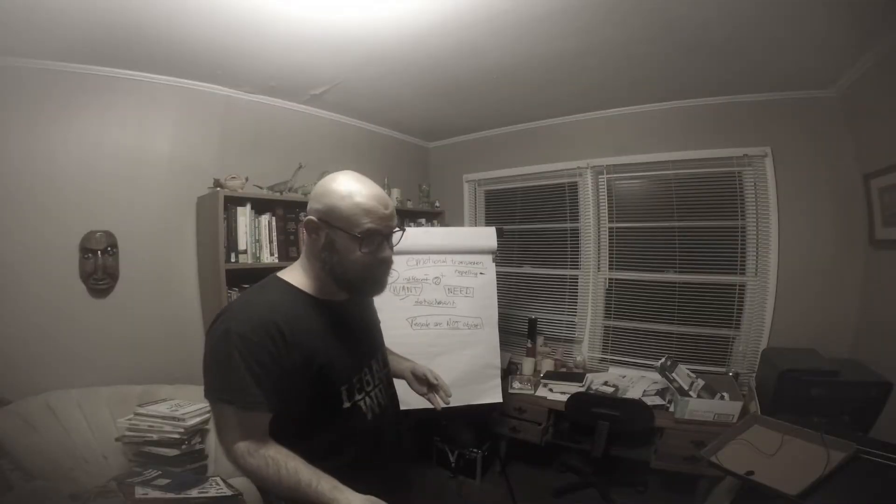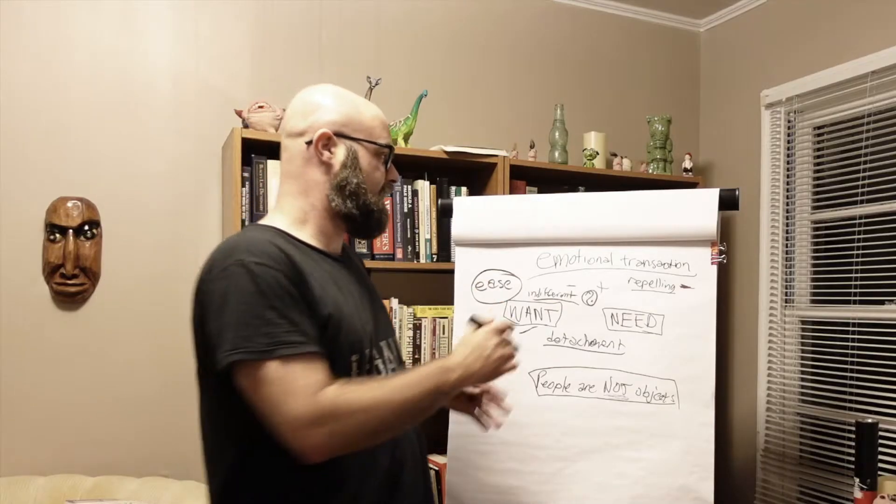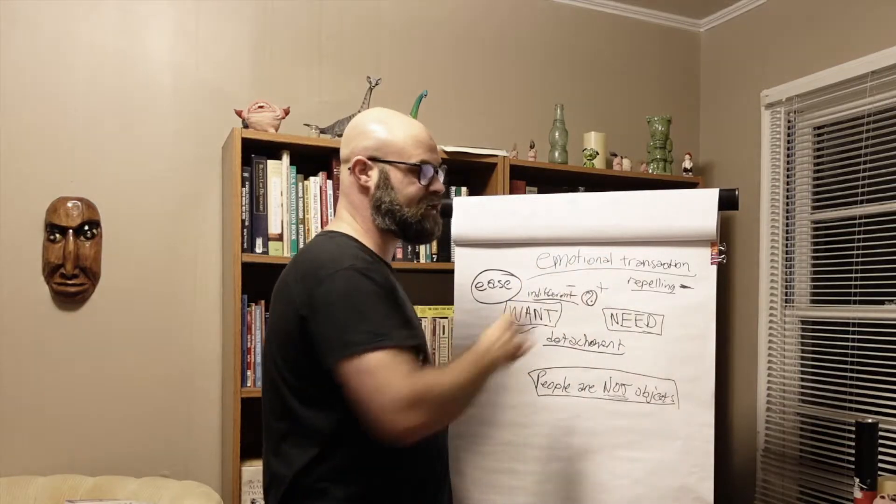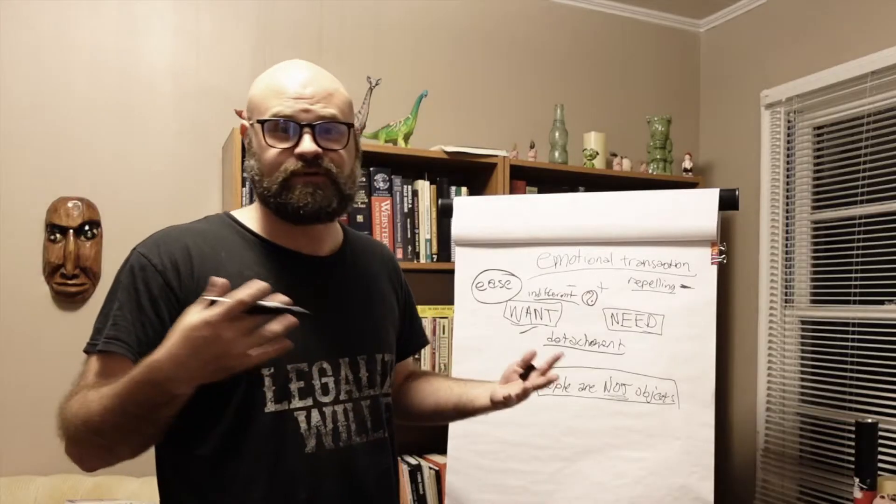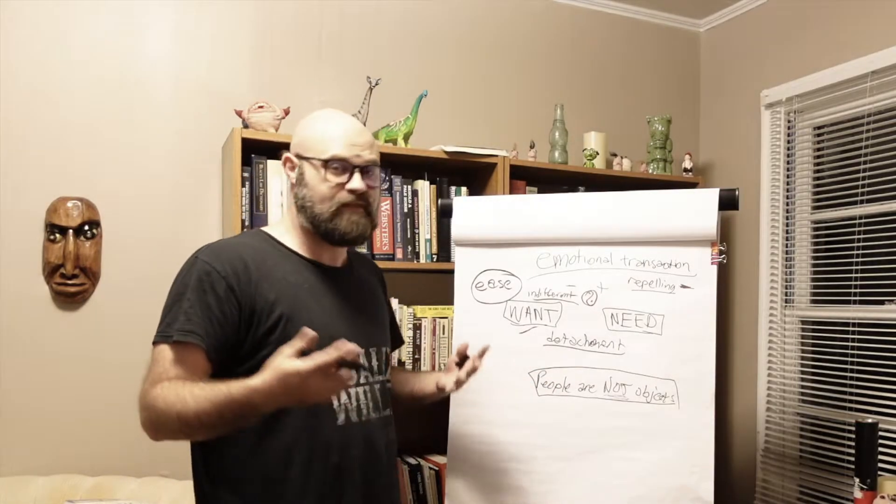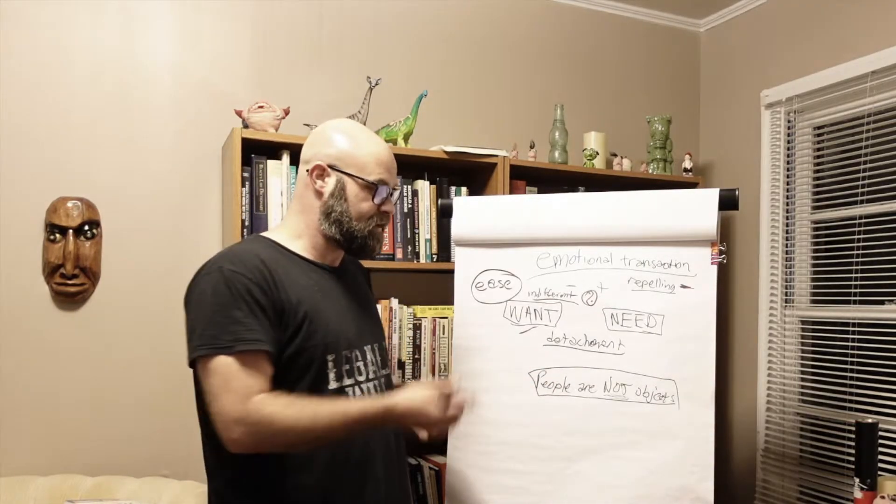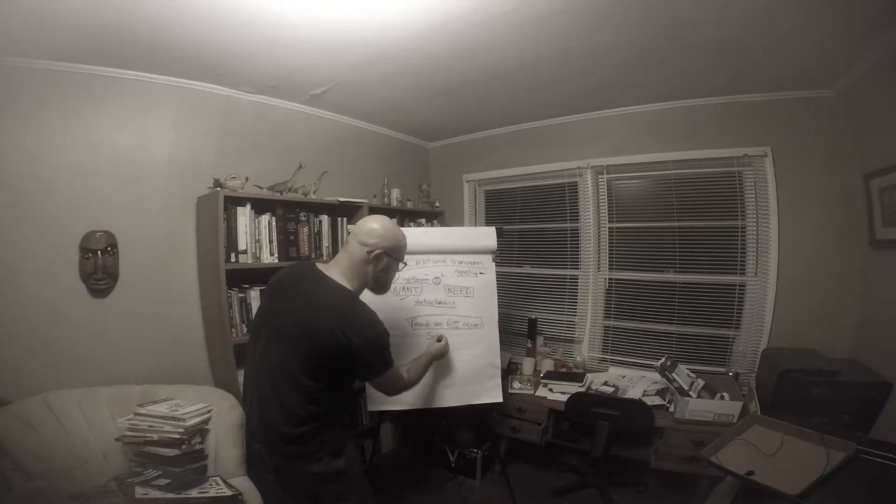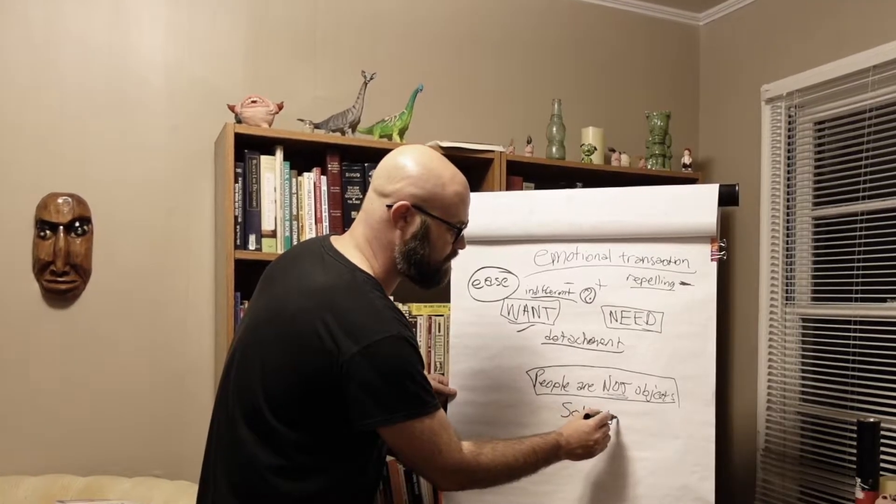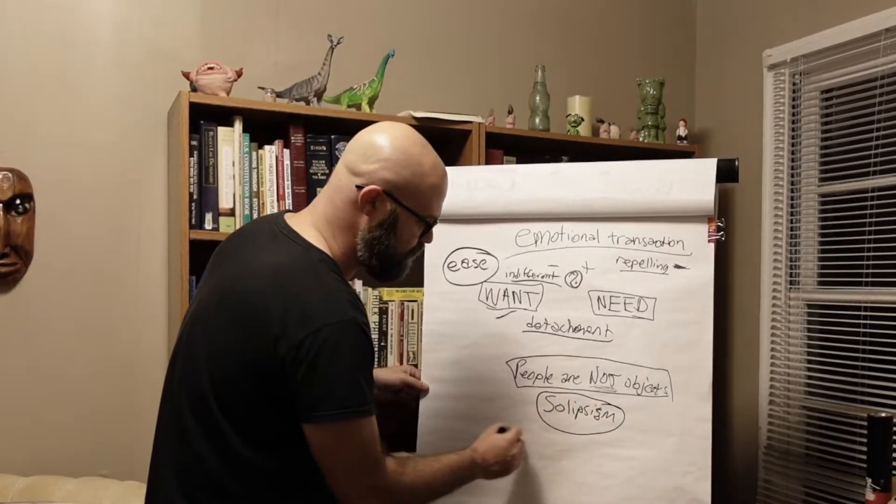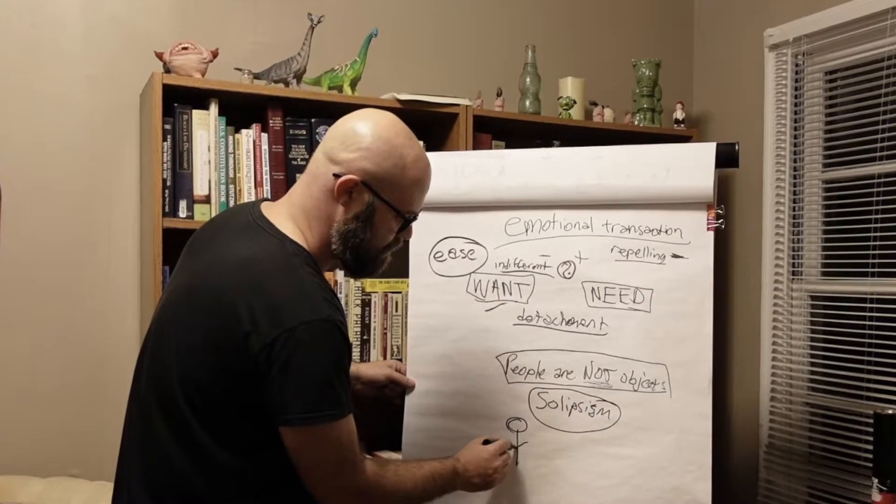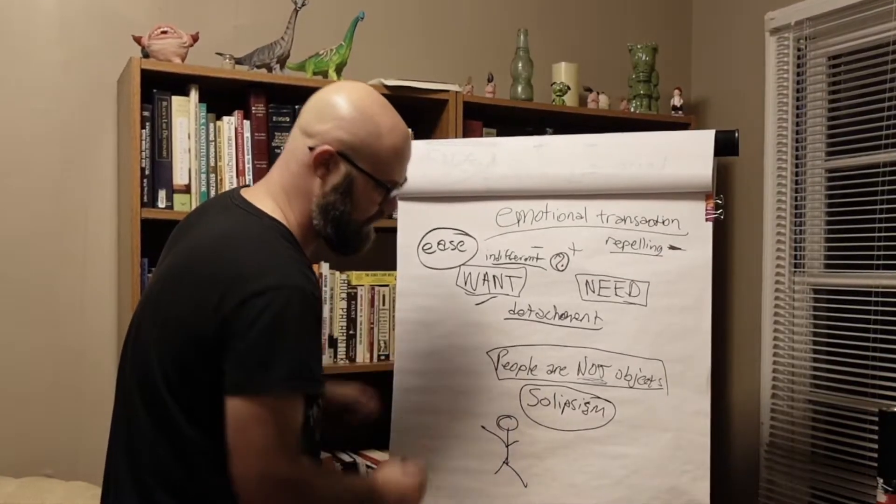But when we begin to manipulate people, we are creating all these weird emotional transactions in the universe where people are not going to want to just yield to what it is that we want them to do. Because people are not objects. We don't live in a solipsistic world. Solipsism is the idea that you are the only thing in existence.